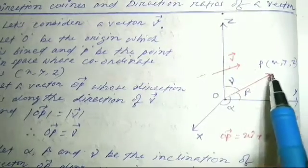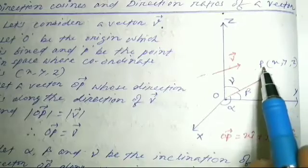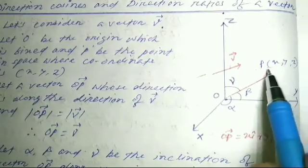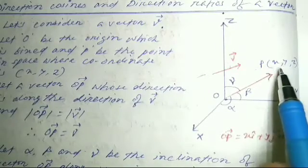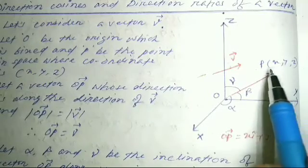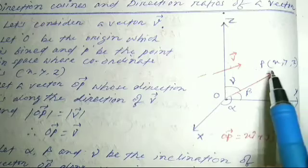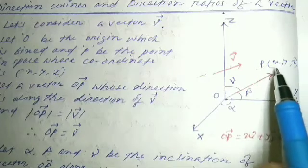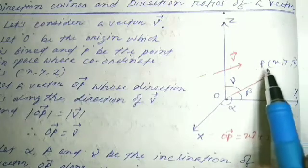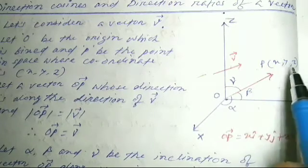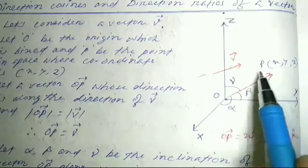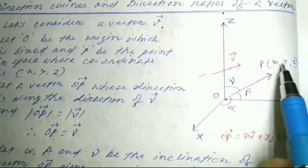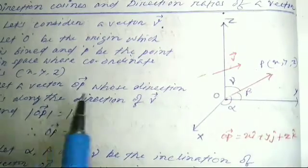Then this is a position P with coordinates x, y, z. We have to write down the coordinate — the coordinate of x, then y, then z. So P is the coordinate x, y, z.